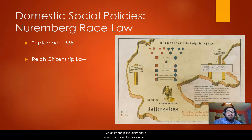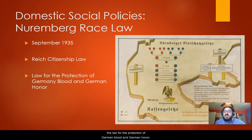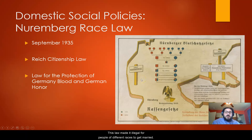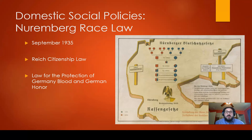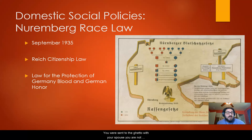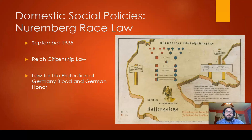Citizenship was only given to those who were racially pure. The second part was the Law for the Protection of German Blood and German Honor, shown in the picture here. This law made it illegal for people of different races to marry. Jews could no longer marry, flirt, or be romantically involved with German men or women. If you had an interracial marriage, you were sent to the ghetto with your spouse — not preserved, not saved.